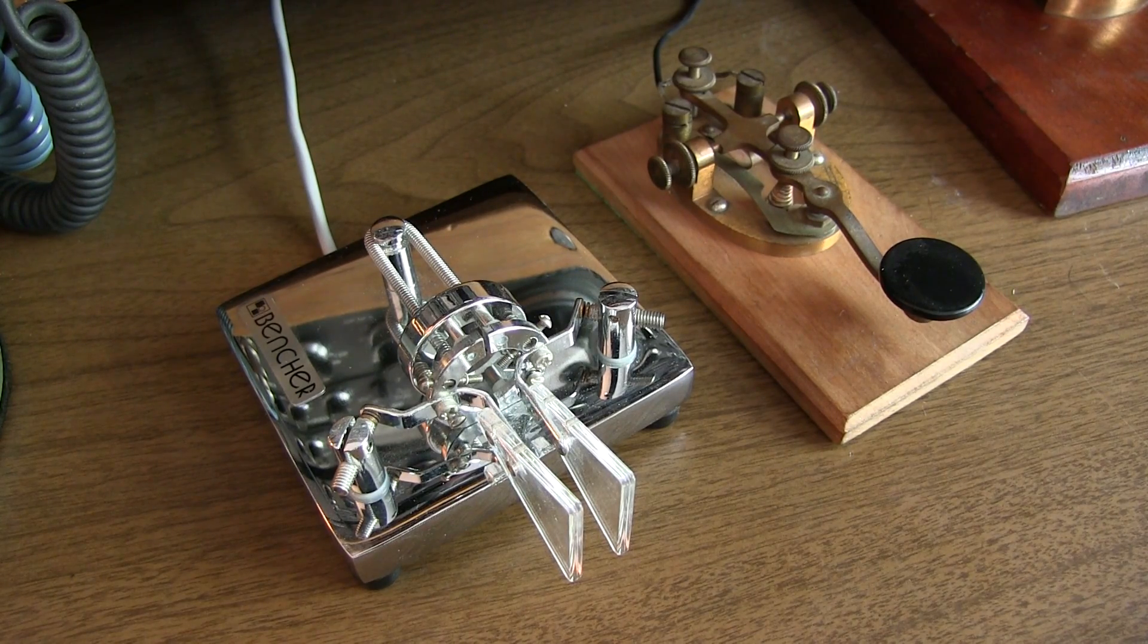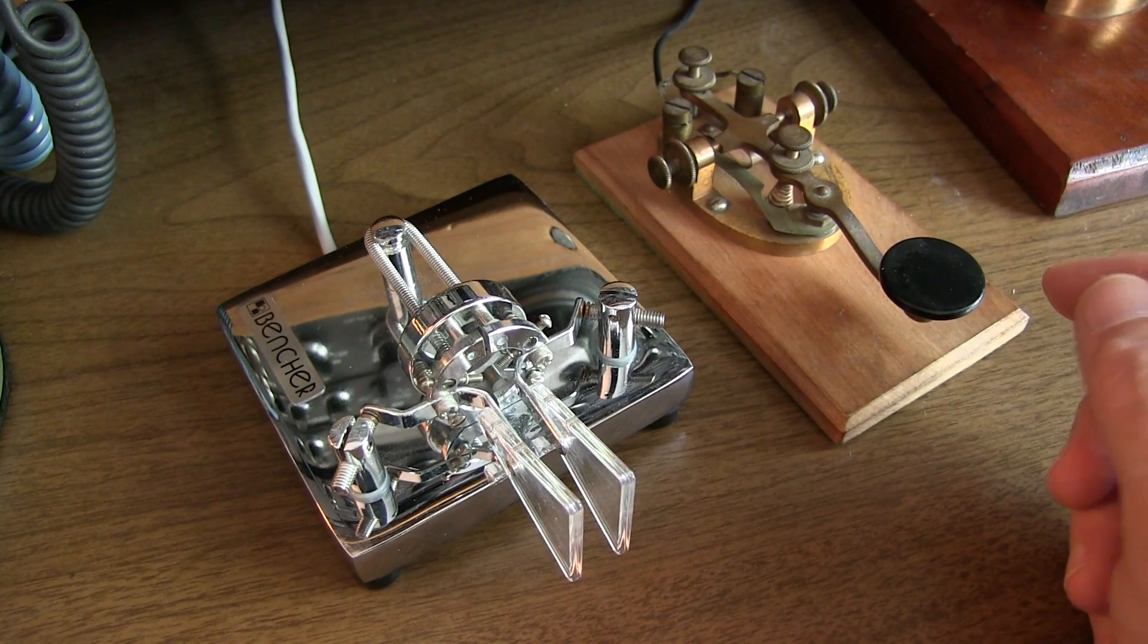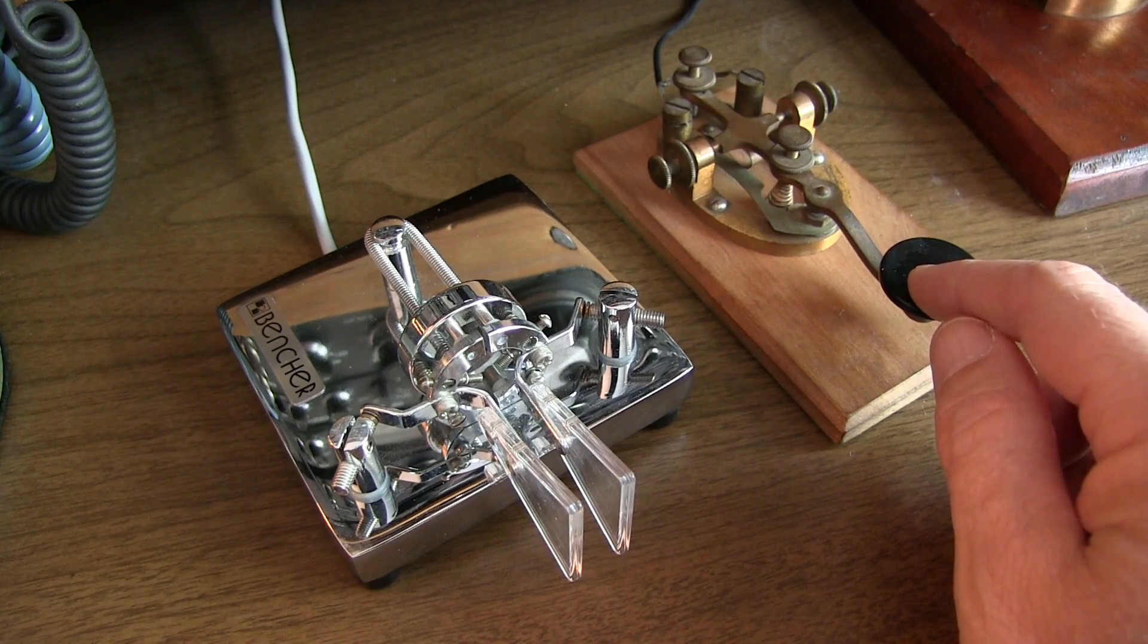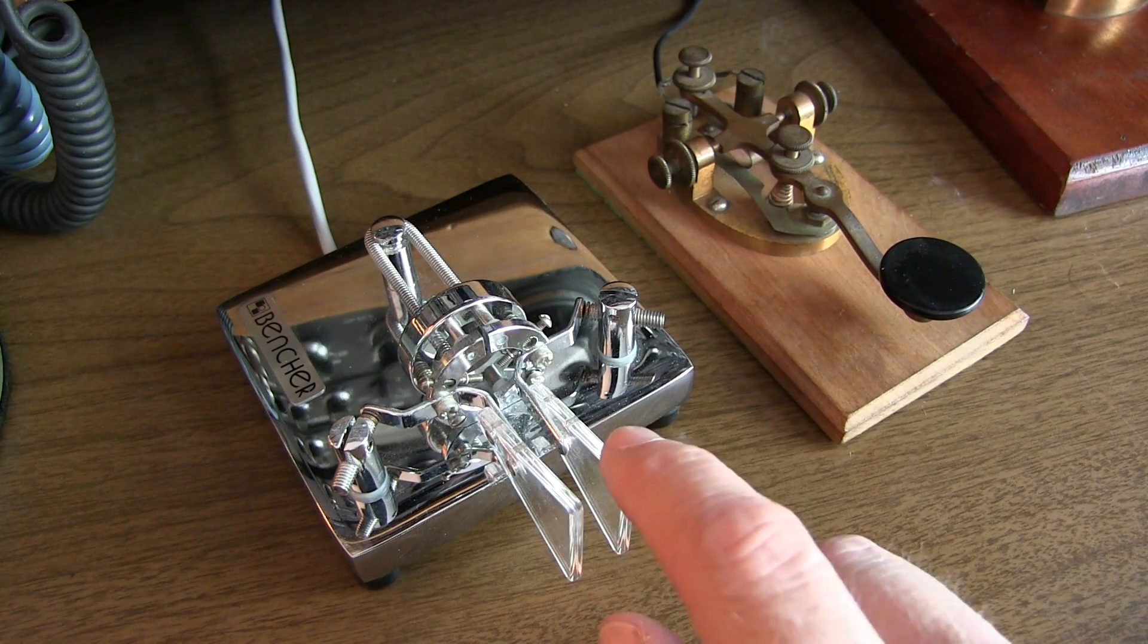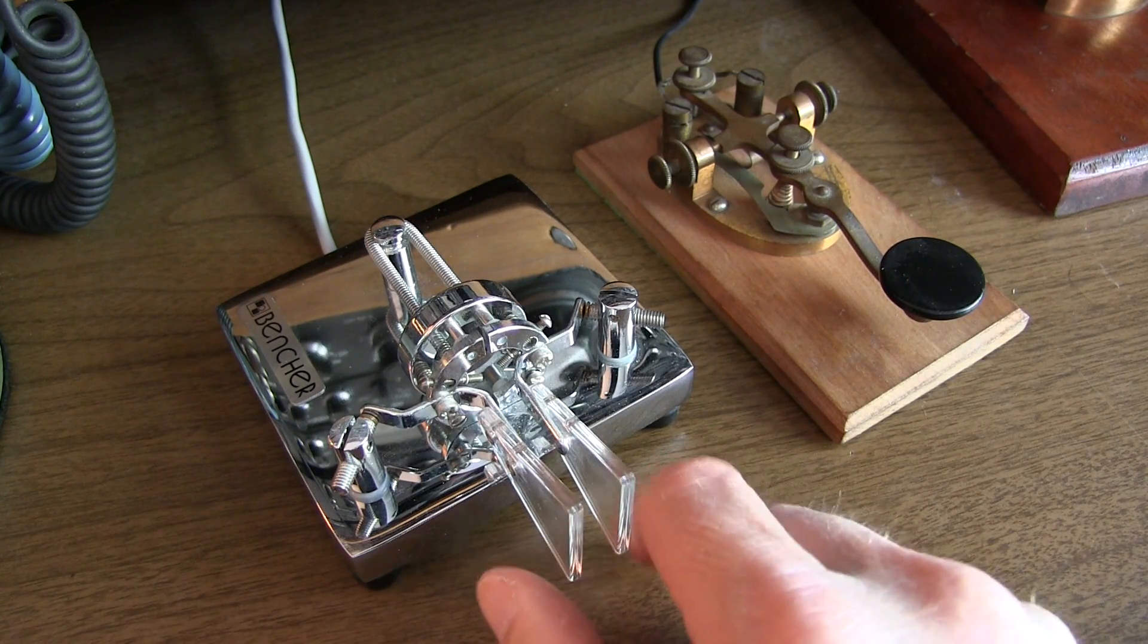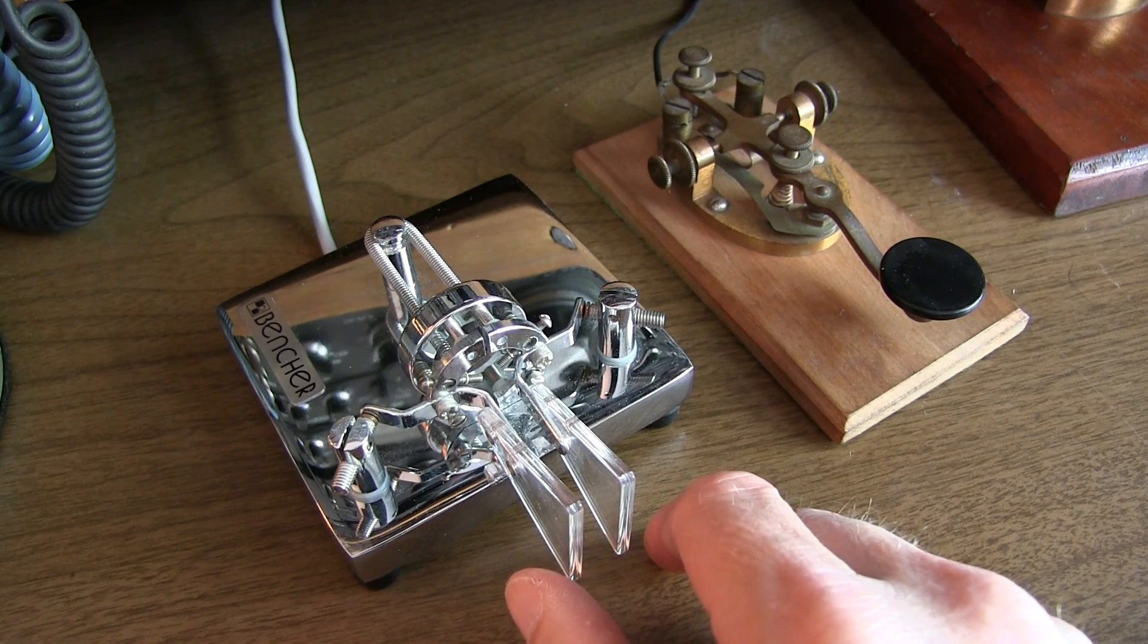In this video, we're going to take a look at the basics of sending Morse code or CW using a straight key like this, as well as a dual lever paddle along with electronic keyer. We'll also talk a little bit about iambic keying.